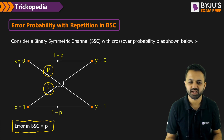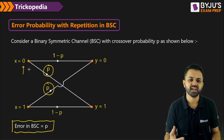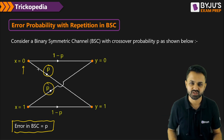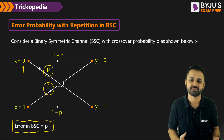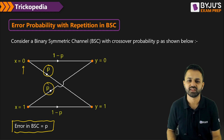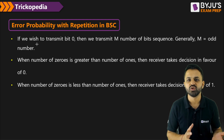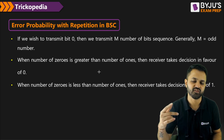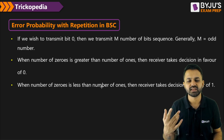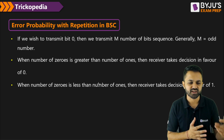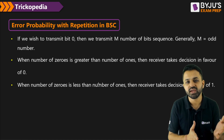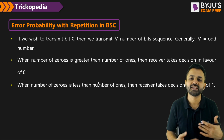If instead of transmitting a single 0, we have repetition in the binary symmetric channel — that means if I want to transmit 0, I am transmitting multiple 0s — then how can you calculate the error probability? The concept is: if we wish to transmit a 0, we transmit m number of bits where m is generally odd. If the number of 0s received is greater than the number of 1s, we take a decision in favor of 0.